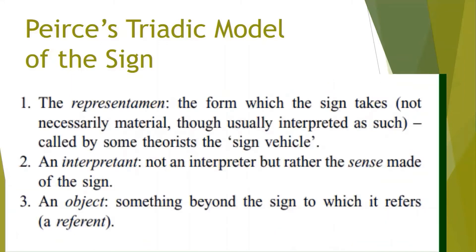In simple terms, the representamen refers to the form which the sign takes. Not necessarily material, though usually interpreted as such, it is also called by some theorists as the sign vehicle. An interpretant does not refer to an interpreter, but rather to the sense made of the sign. And finally, an object, which refers to something beyond the sign to which it refers.